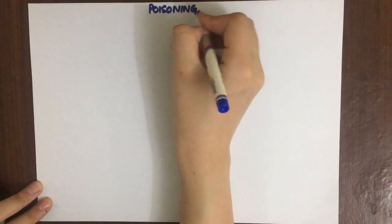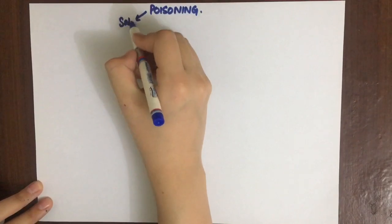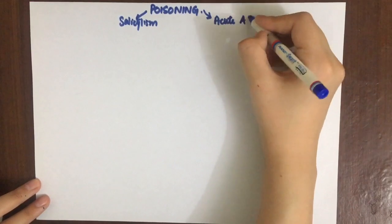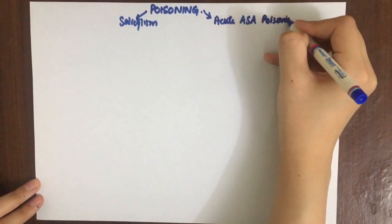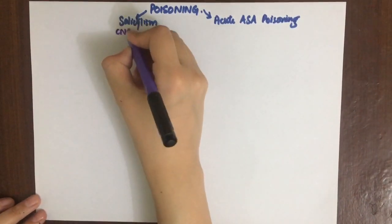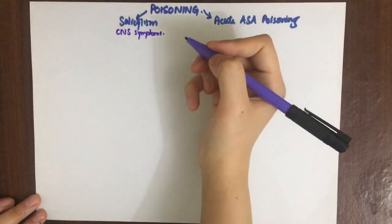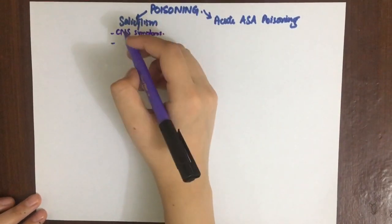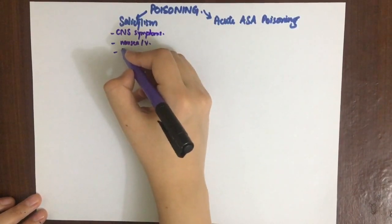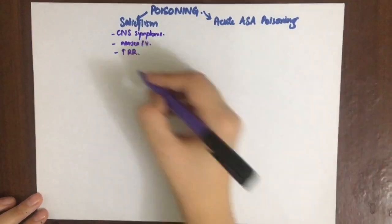NSAID overdosage can cause two forms of poisoning. Mild salicylicism presents with CNS symptoms including headache, tinnitus, vertigo, confusion, nausea, vomiting, diarrhea, sweating, hyperpnea, and electrolyte disturbances. This is reversible if therapy is stopped.